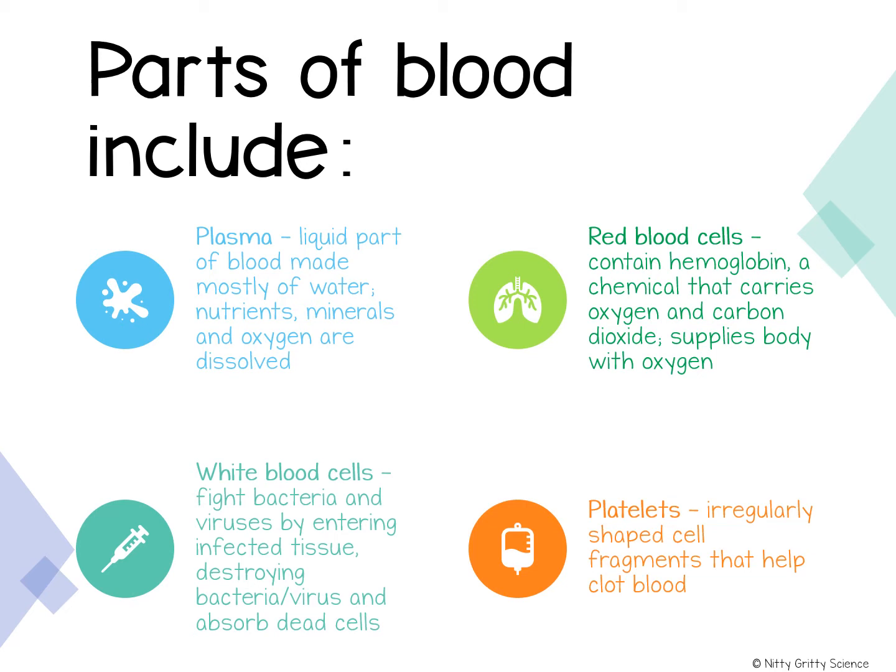Red blood cells take up oxygen in the lungs and deliver it to cells elsewhere in the body. They are produced in the red bone marrow and under a microscope they look kind of like a thumbprint cookie. They can bend and twist super easily, and this flexibility allows them to squeeze through narrow capillaries. Red blood cells contain hemoglobin, an iron-containing protein that binds chemically to oxygen molecules, which is what makes them bright red.